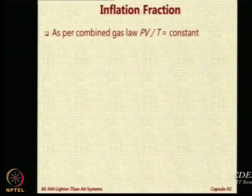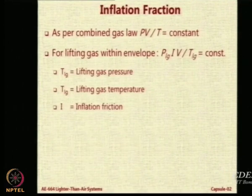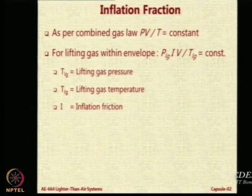Applying a simple gas law which says PV/T equals constant, for any lifting gas inside a closed envelope we can say that P_LG × I × V / T_LG is a constant. We say this because I × V is the multiplication of the inflation fraction with the volume. In my previous slides I used V_ENV for the envelope volume, but since we are in aerostatics and to avoid confusion with velocity, whenever you see capital V from now on, understand that it means envelope volume — I have dropped the superscript ENV to keep the formulae manageable. So P_LG × I × V / T_LG is constant for the lifting gas.